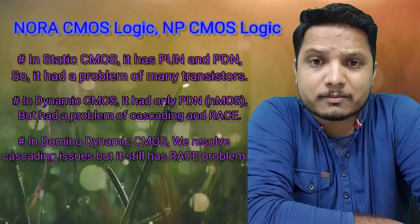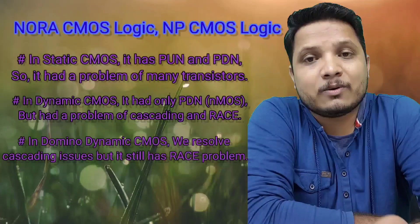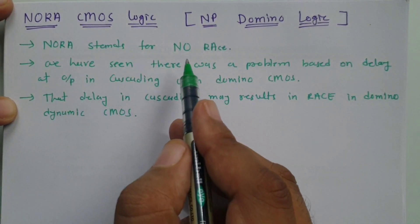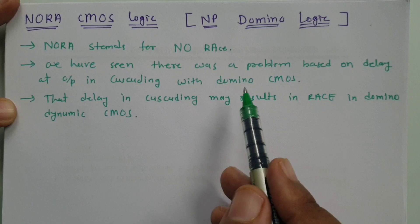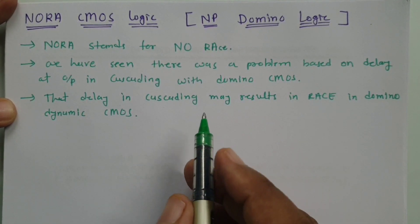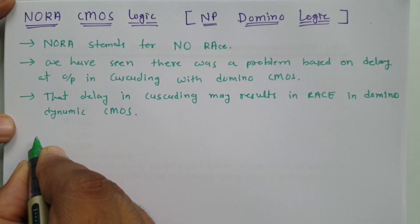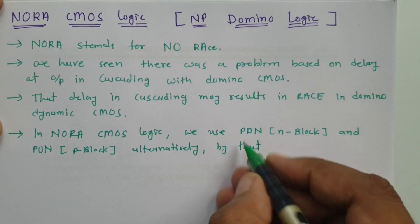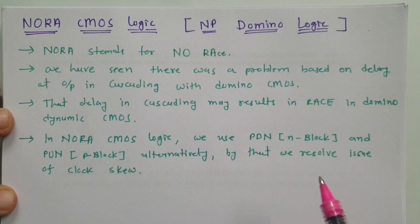Some other solutions exist to avoid those race issues, and that is NORA CMOS. In NORA CMOS, we avoid the racing condition of CMOS circuits. NORA means No Race CMOS circuit. We will see the basic working and circuit of NORA CMOS step by step. In NORA CMOS, all we do is connect the pull-up and pull-down networks alternatively, and by that we avoid issues of clock skew and eliminate race-around conditions.